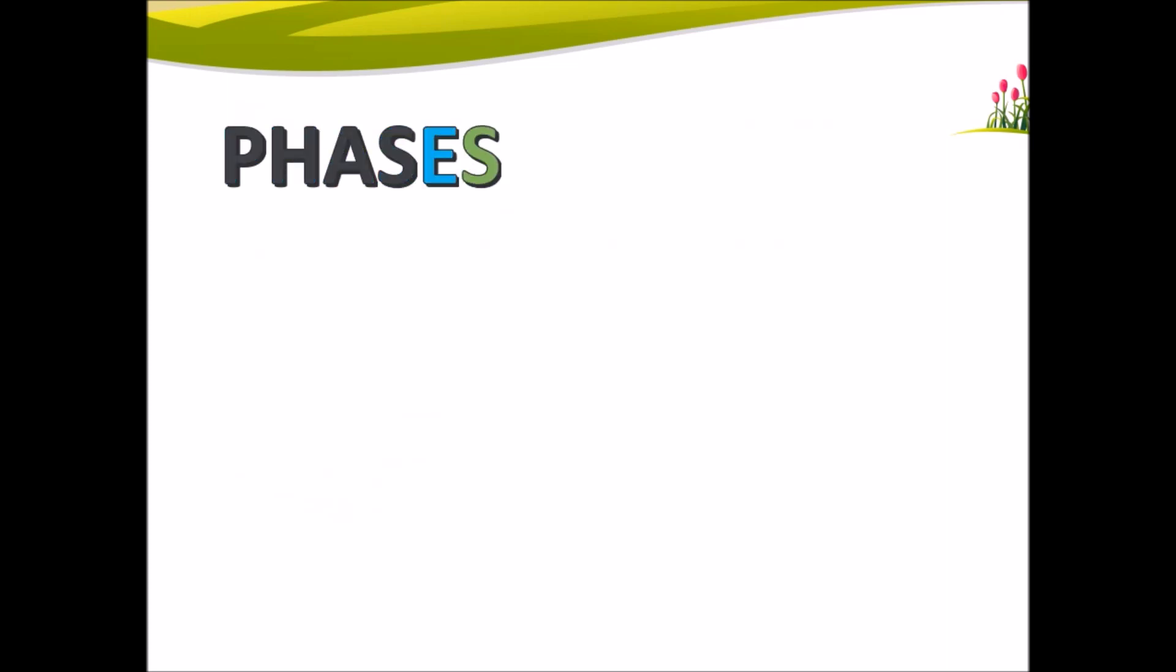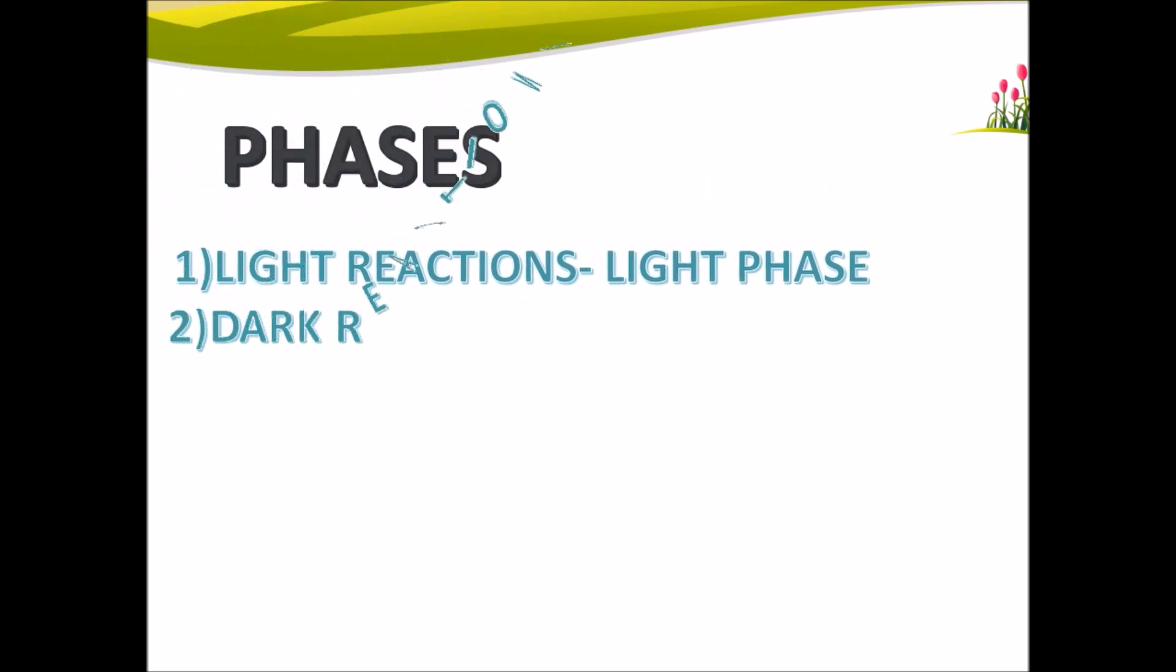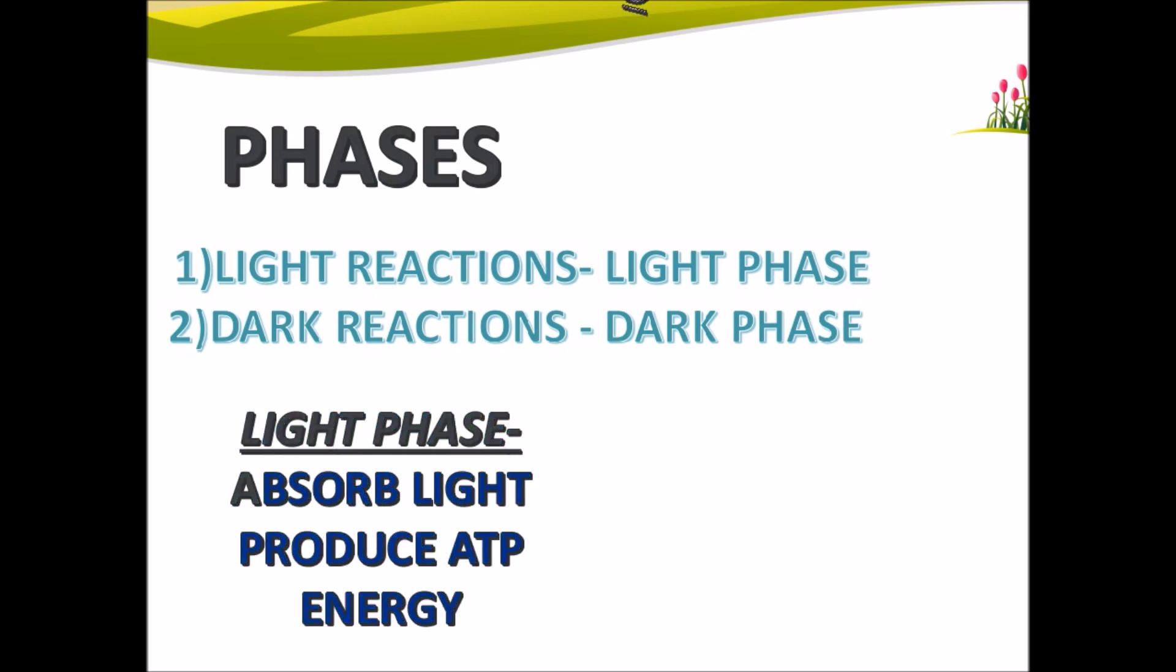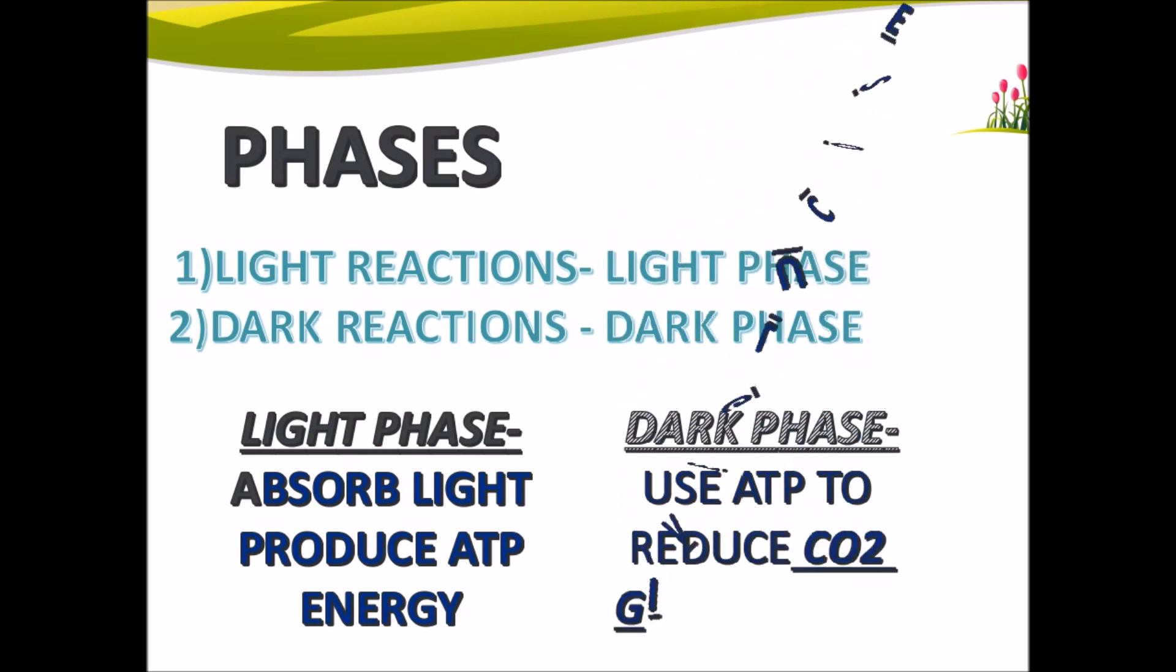The phases involved in photosynthesis are the light reactions called the light phase and the dark reactions called the dark phase. Light phase absorbs light and produces ATP energy. Dark phase uses ATP to reduce carbon dioxide and give glucose.